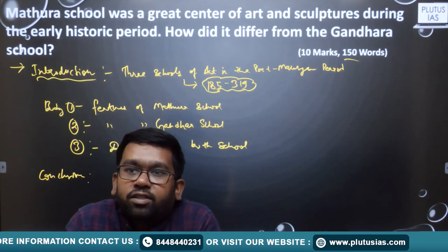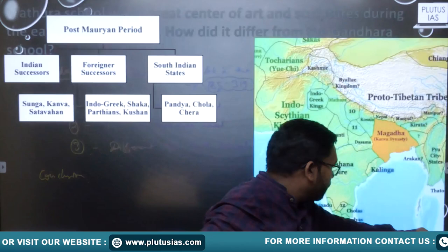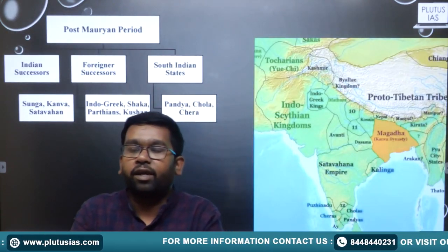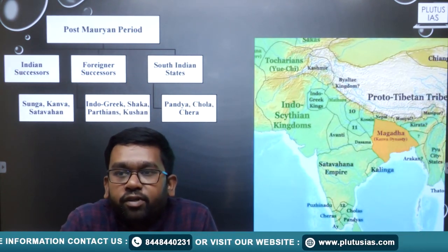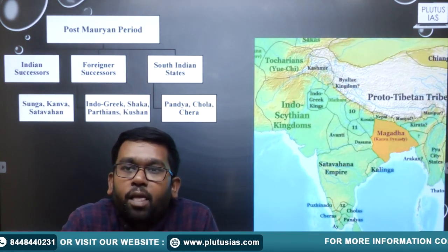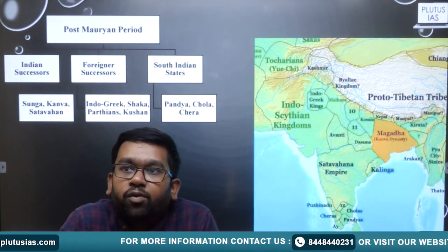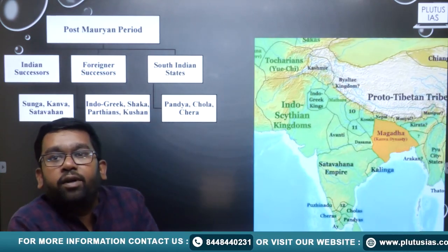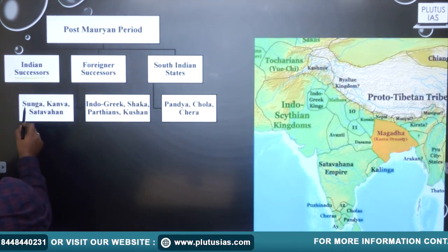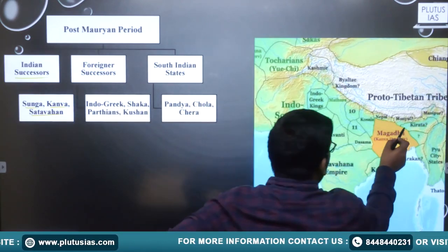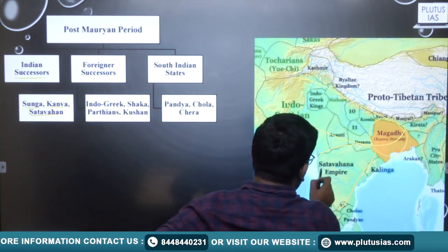After the decline of the Mauryan empire in 185 BC, especially under the last Mauryan ruler, a new dynasty, the Shunga dynasty, was established. In the post-Mauryan period, India was divided into three parts: first, the Indian successors which include the Shunga, Kanva, and Satavahana; the Shungas ruled in certain regions, Kanva was limited to a smaller area, and Satavahana ruled in other regions of India.